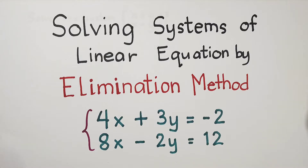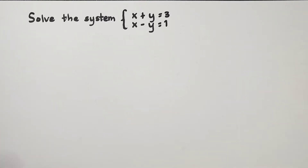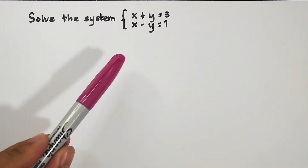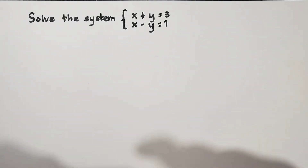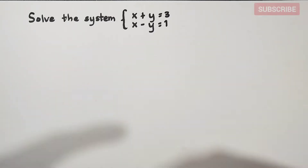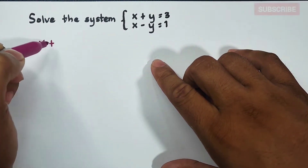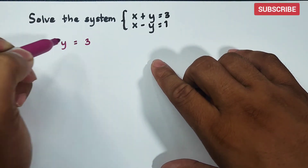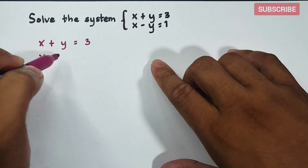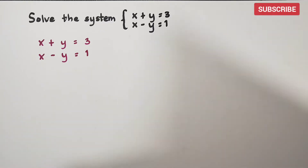Without further ado, let's do this topic. For the first example, this is a basic one. We are asked to solve the system: x plus y is equal to 3, and x minus y is equal to 1. When we say system of linear equations, it is a system composed of two linear equations in two variables — or it can have more.